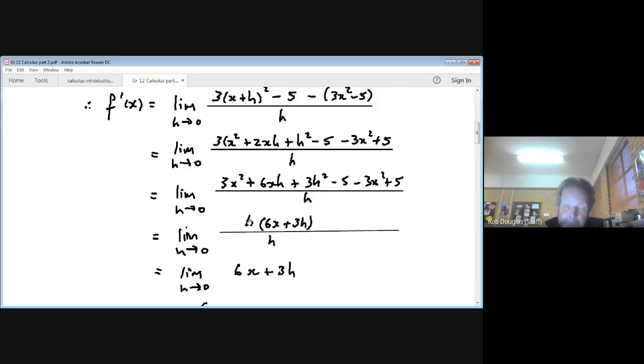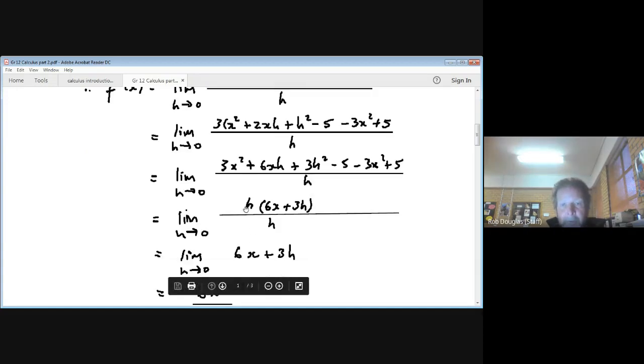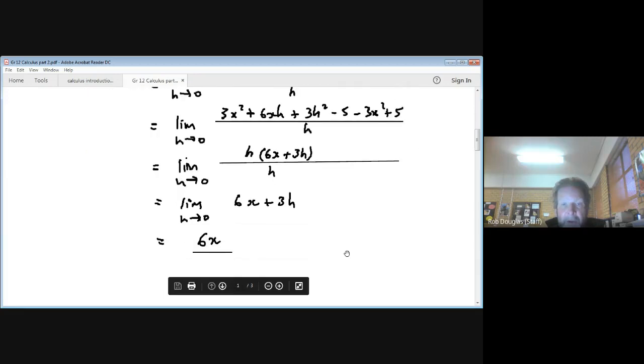You factor out the h. Now, hey, you've got an h on the bottom. And this is really good news. We won't be dividing by this thing that's going to approach 0. So we go h divided by h. It cancels. We just get 6x plus 3h.